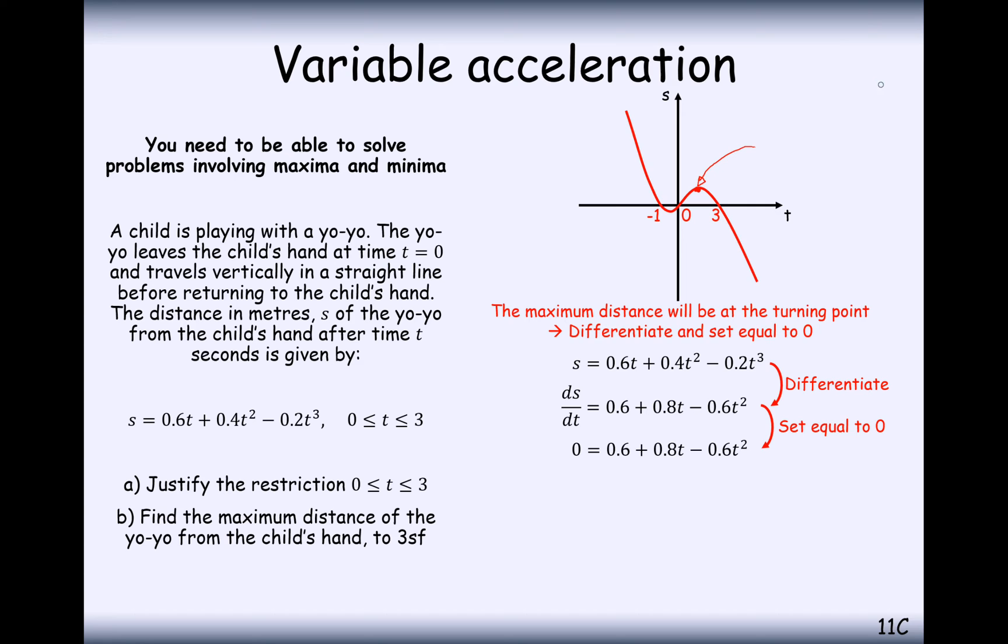Because what you ideally want to happen is for the yo-yo to drop down, stop, and then come back up again. So we want to find out when this velocity is equal to 0. So in this case here, we've now differentiated and we've set equal to 0.